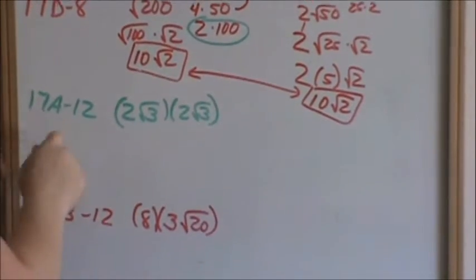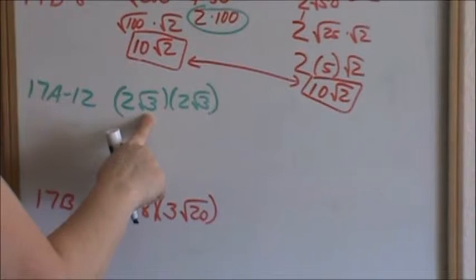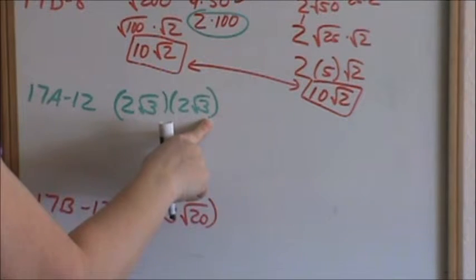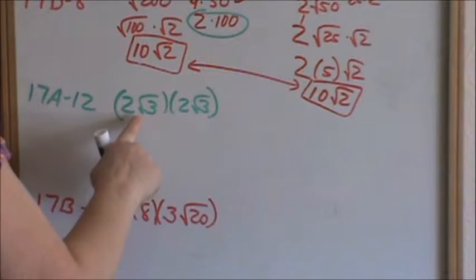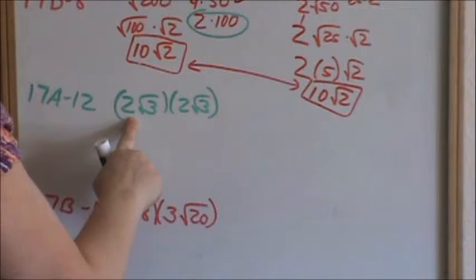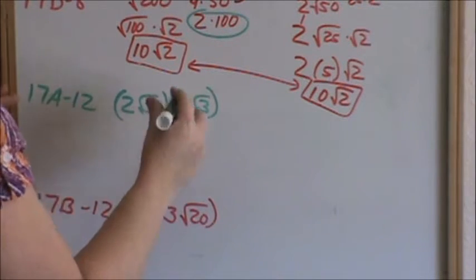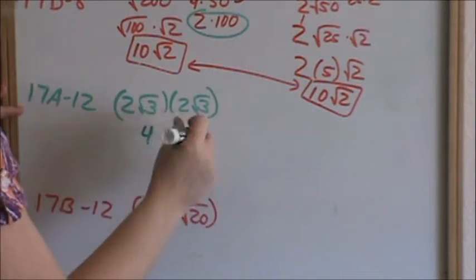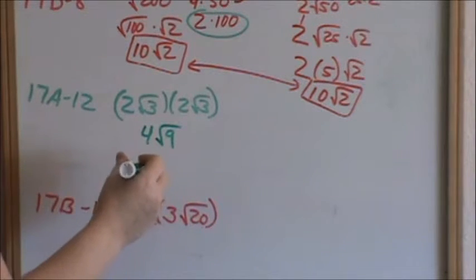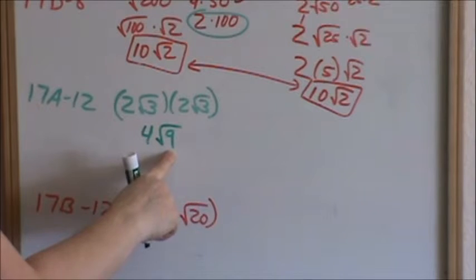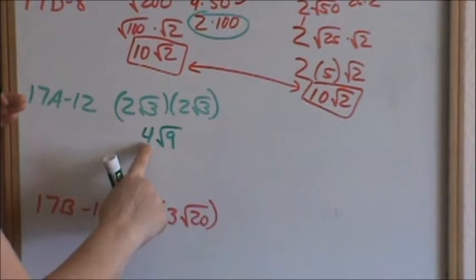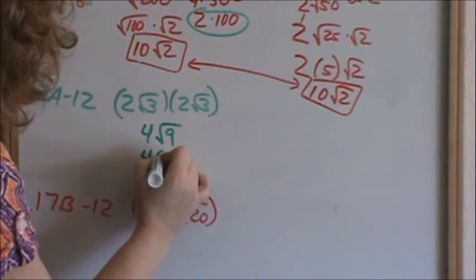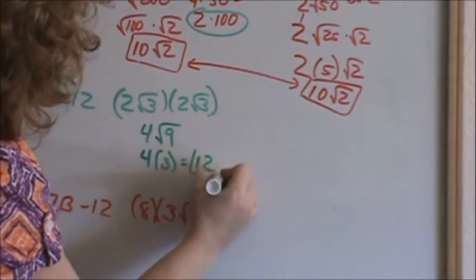Let's jump down to number 12: 2 times square root of 3, times 2 times square root of 3. We are now combining simplifying radicals with multiplying radicals. Remember, the rule was numbers to numbers, radicals to radicals. So 2 times 2 is 4. Square root of 3 times square root of 3 is square root of 9. Always look to see if you can simplify your radical. This radical will simplify — it is already a perfect square. Square root of 9 is 3. So it would be 4 times 3, which equals 12. That would be your final answer.